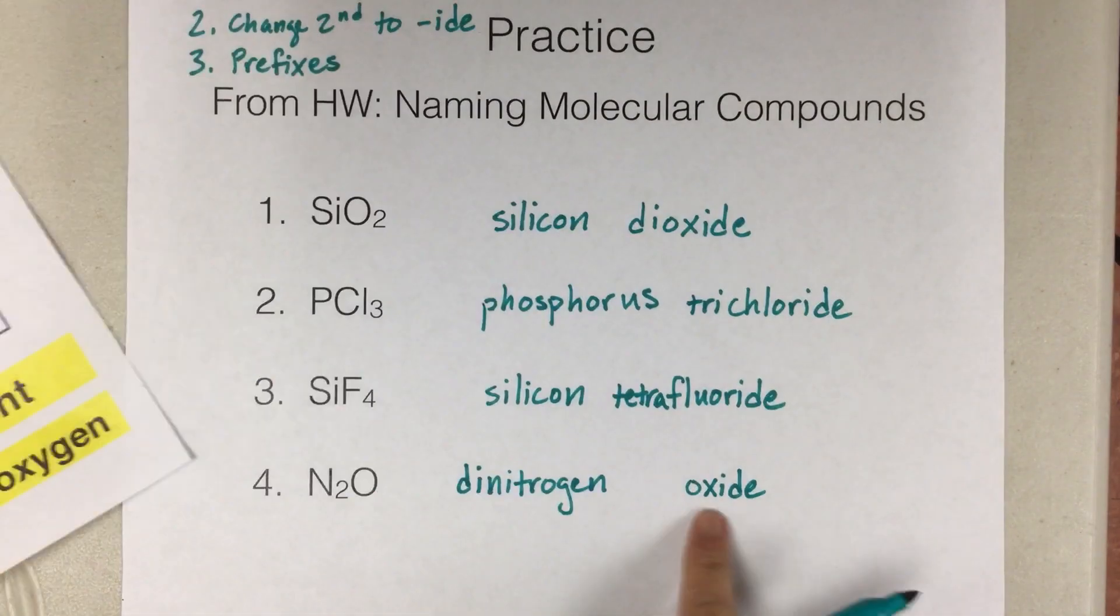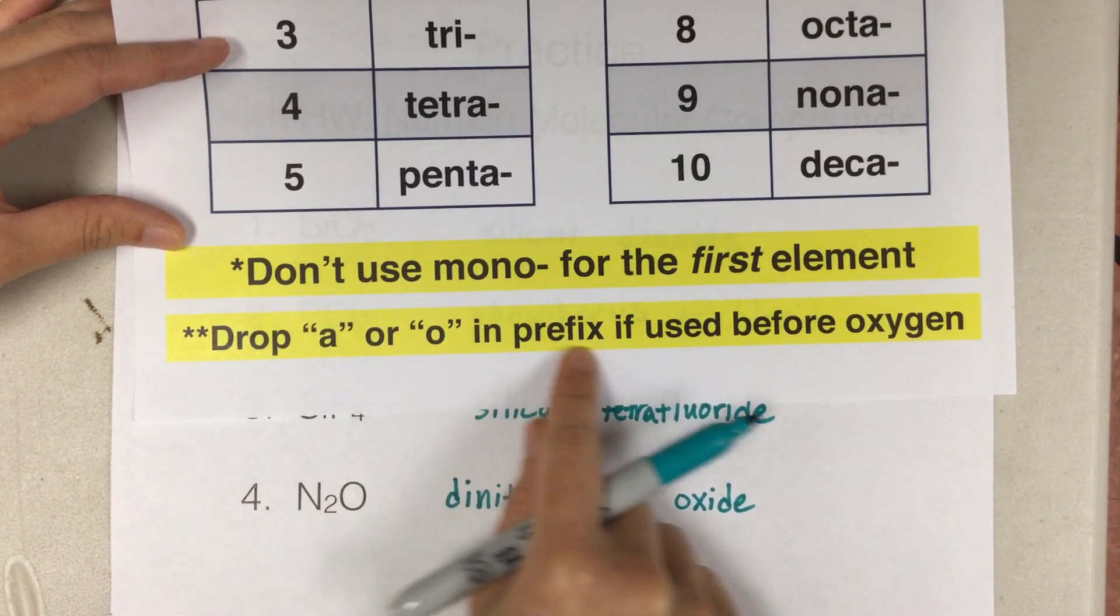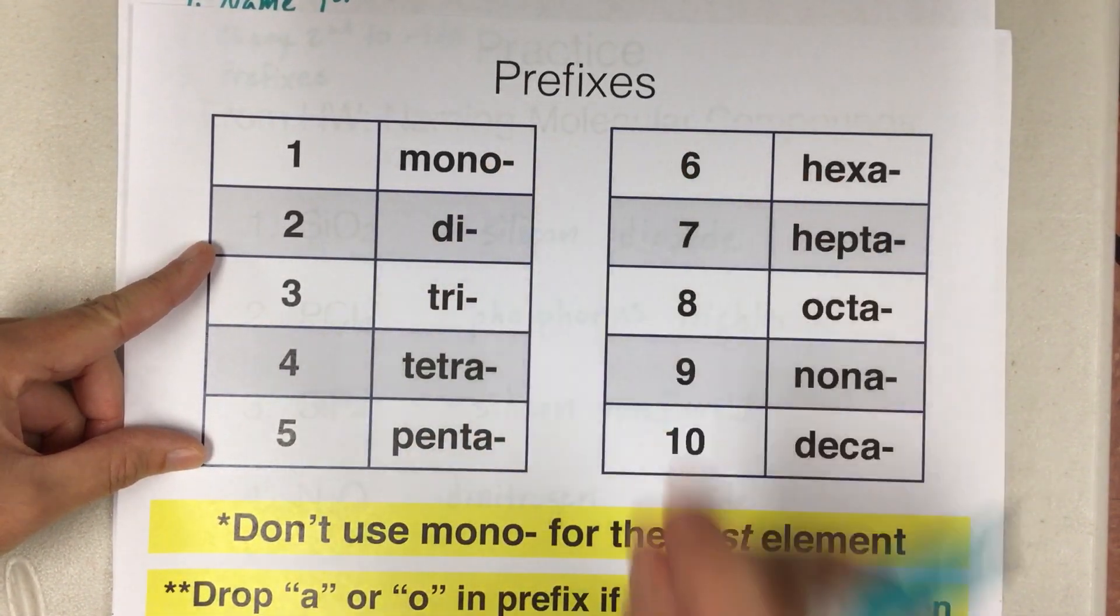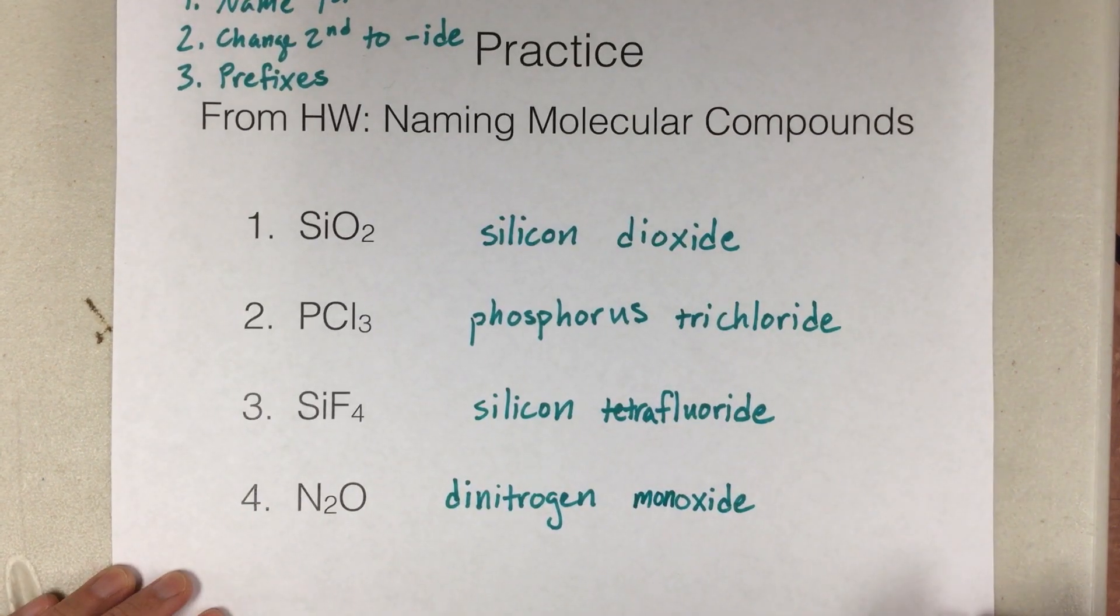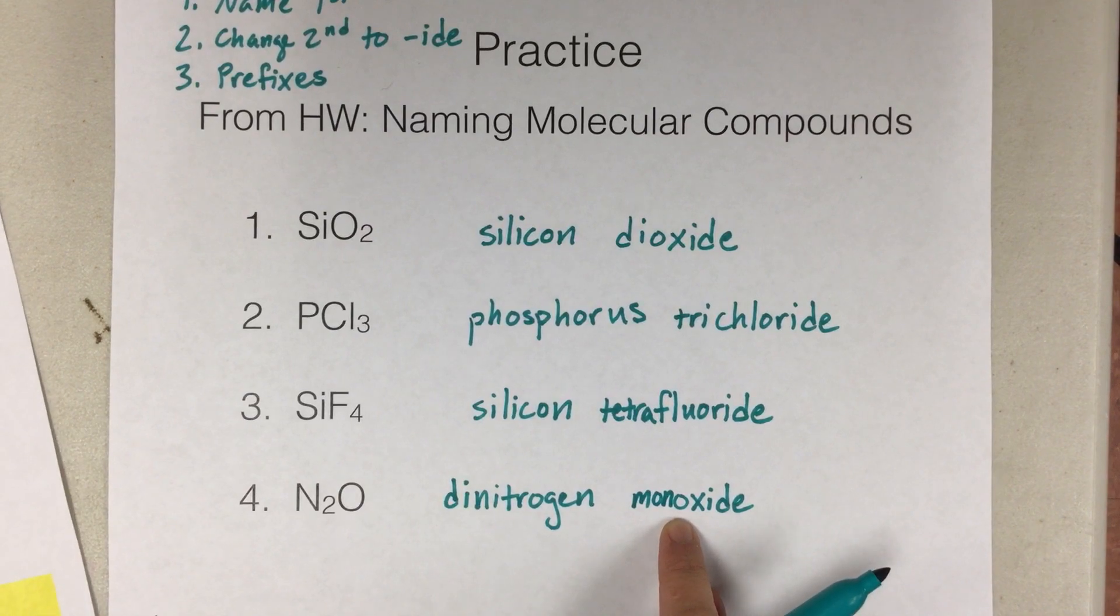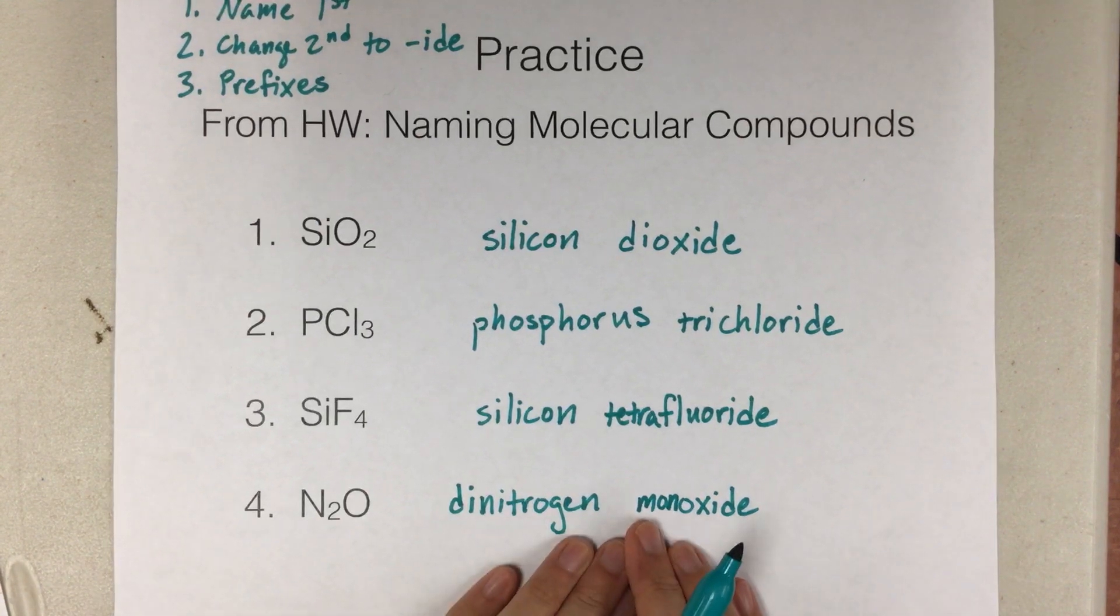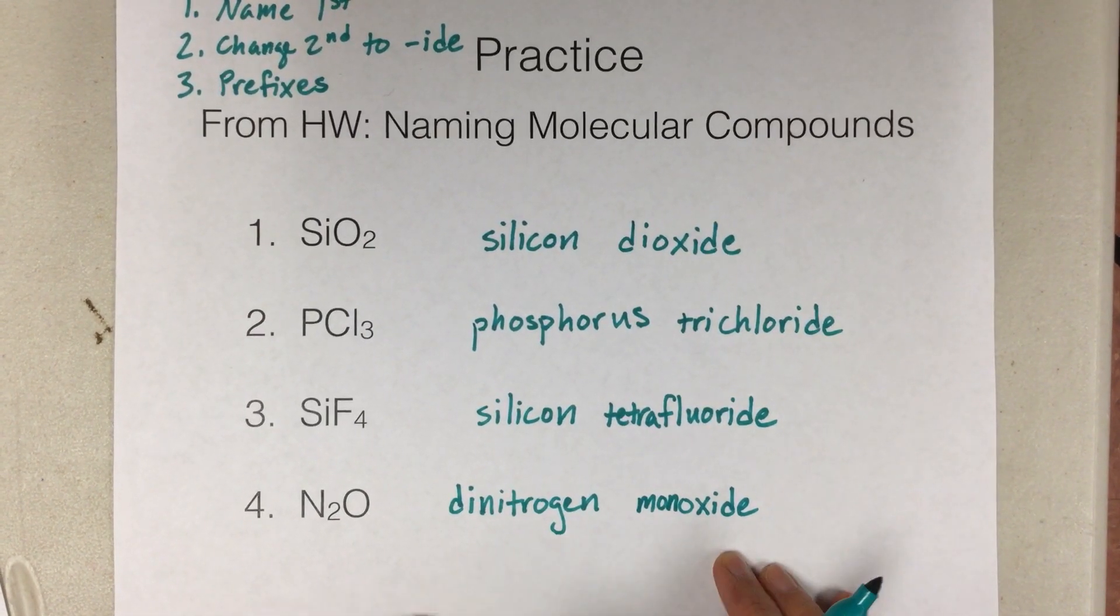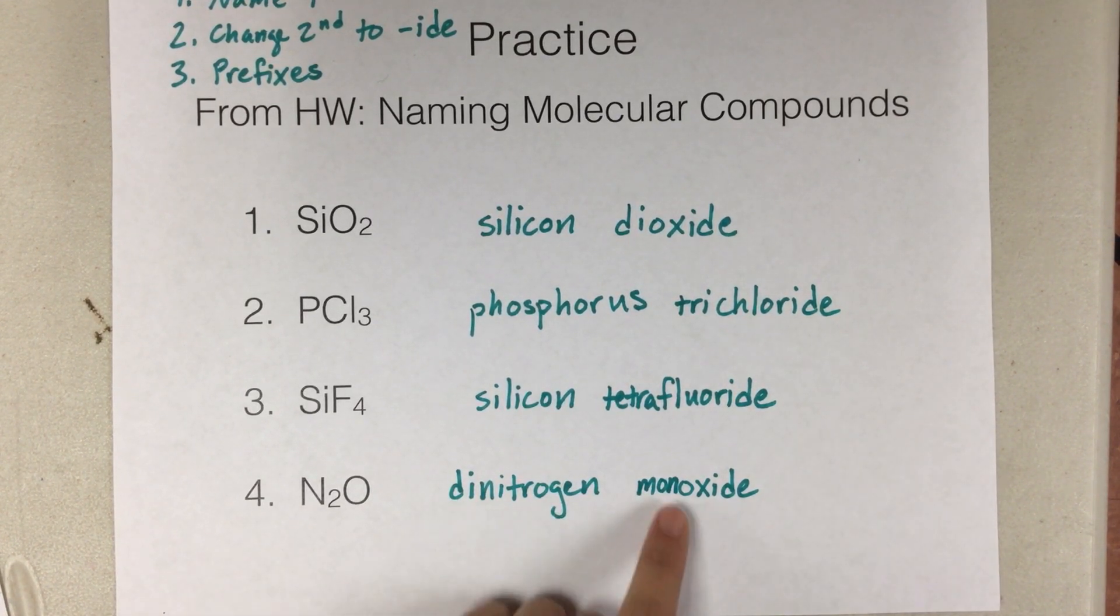But since this one is with oxygen, we have to use this little note that we will drop the A or O in the prefix if it's used before oxygen. So instead of mono oxide, that's kind of awkward. So we drop this O, and it just becomes monoxide. Okay, so since it ended in an O, and it came before oxygen, we don't want two O's in a row, or an A and an O in a row. So we'll drop that, and it just becomes monoxide. And you've maybe heard that in carbon monoxide. All right, so this name tells us that there are two nitrogens and one oxygen.